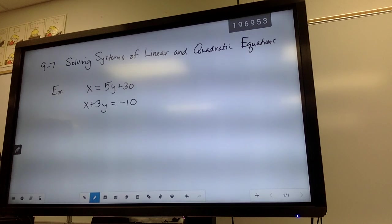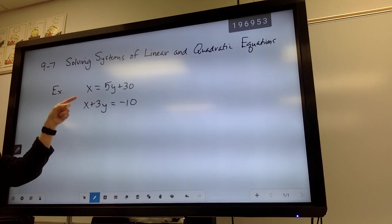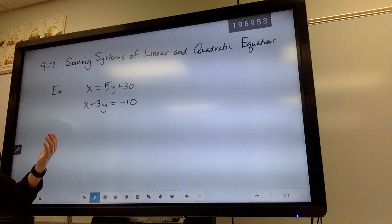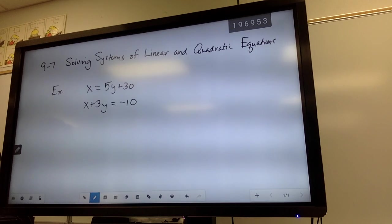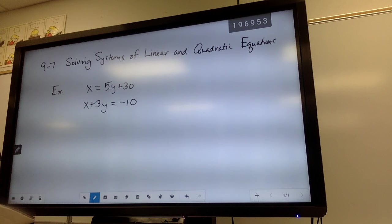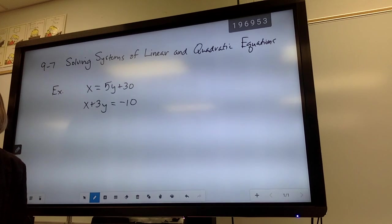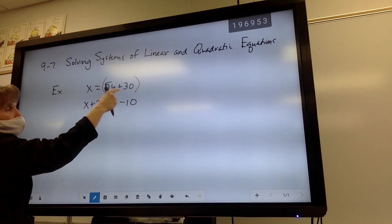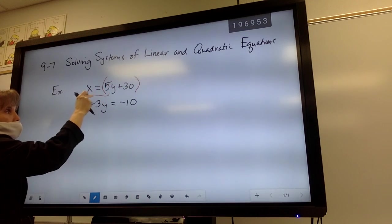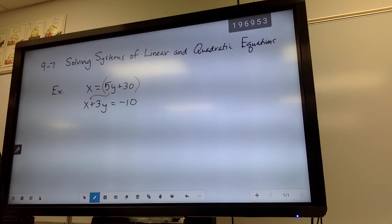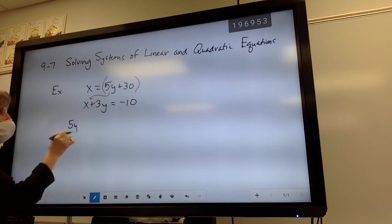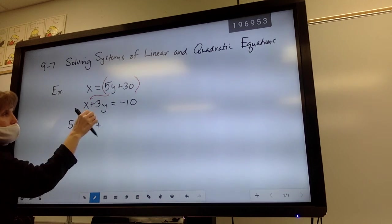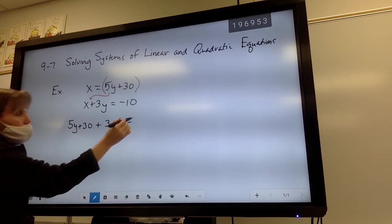Okay, so we started out by putting these on a graph, and where the lines crossed was the solution. We didn't really like graphing, right? So then we came up with the substitution method or the elimination method. Do you remember those? Okay, so this one is set up to do what? Substitute or eliminate? Substitute. Set up to substitute. So I'm going to take, since all of this, 5y plus 30 is equal to x, I'm going to take that and I'm going to substitute that into the bottom equation for the x. So I would say 5y plus 30, that is replacing the x, plus the 3y, and it equals negative 10.